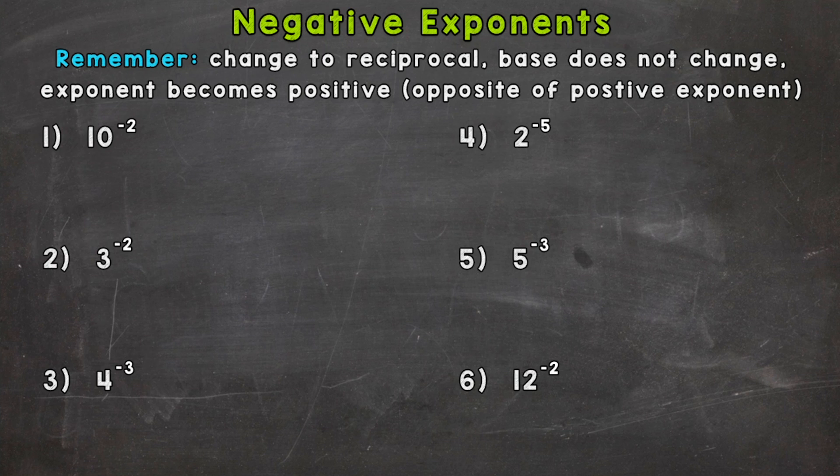Let's jump right into number one. We have 10 to the power of negative 2. We know that 10 to the power of positive 2 equals 100. 10 to the power of negative 2 does not give us negative 100. A negative exponent does not mean a negative answer, but it will give us a different answer than what 10 to the power of positive 2 gives us.